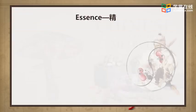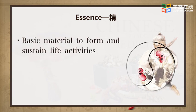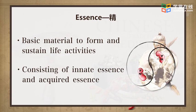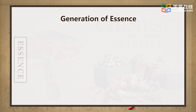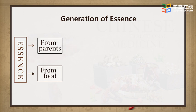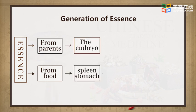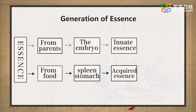Essence refers to the mineral substance of living beings derived from parents and acquired from food essence, which is the origin of life and the basic material to form and sustain life activities of the human body. In terms of the source of generation, essence is divided into the innate essence, which comes from parents, and acquired essence, which comes from food and water with the function of the spleen. Innate essence refers to the refined material before birth, mainly the reproductive essence from parents, and is the raw material for the formation of the embryo. The innate essence is the origin of life and the basis for growth, development, and reproduction of the human body.